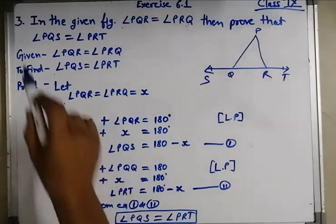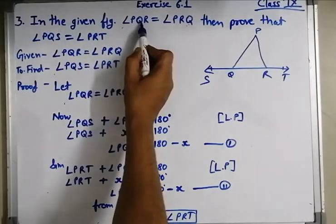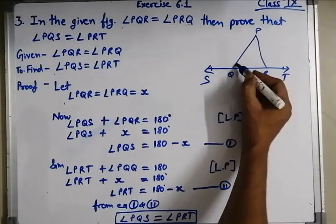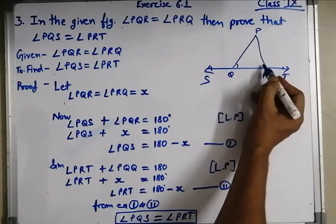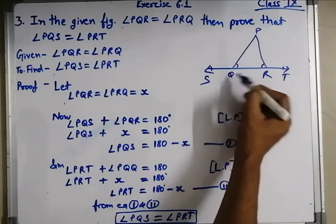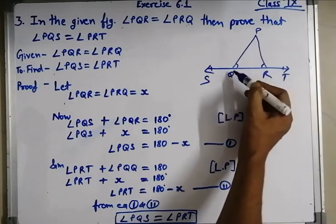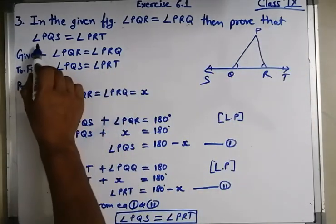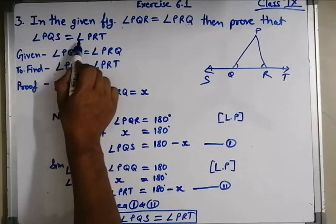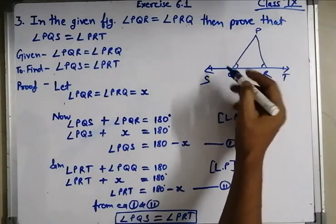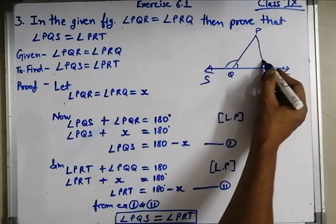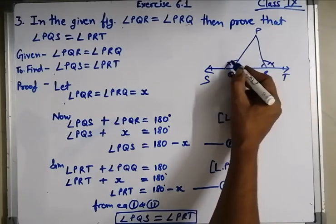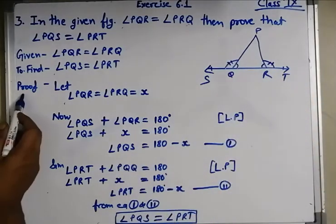Question number 3. In the given figure, angle PQR is equal to angle PRQ — meaning this angle and this angle, PQR and PRQ, are equal. Then prove that angle PQS is equal to angle PRT. These two angles we have to prove equal.